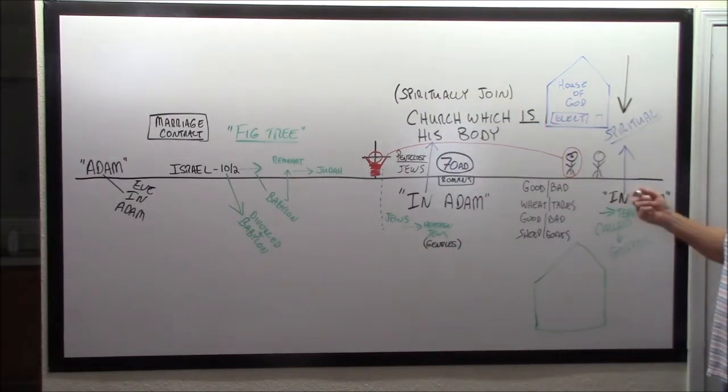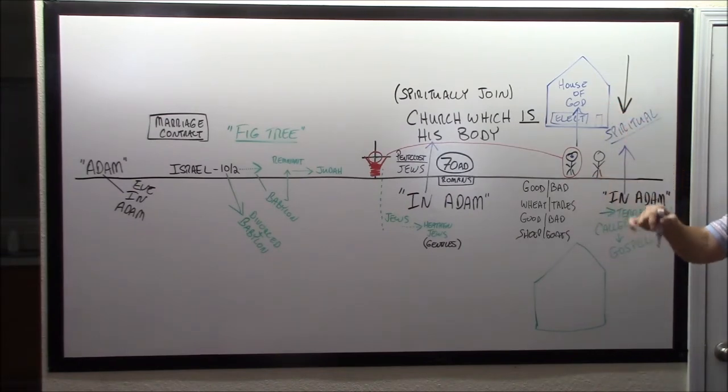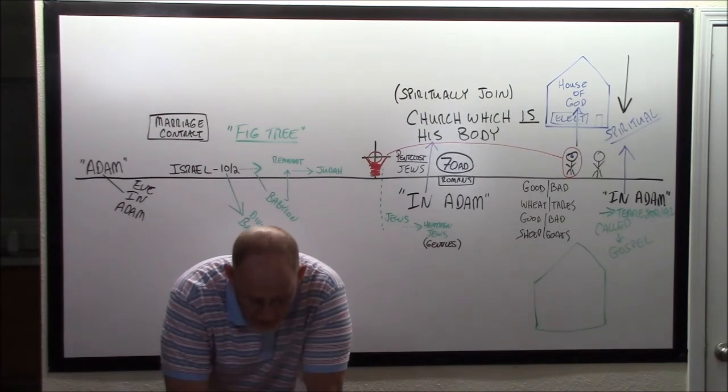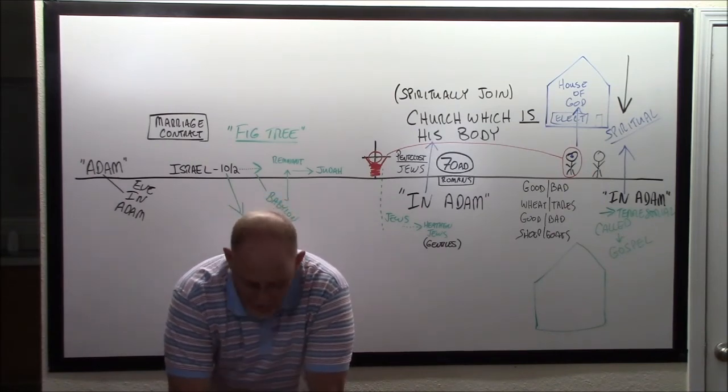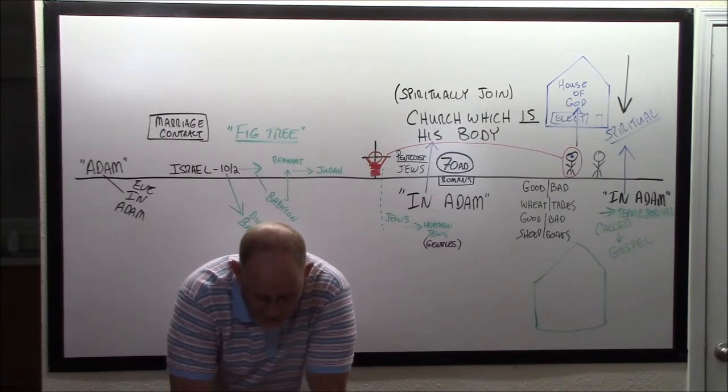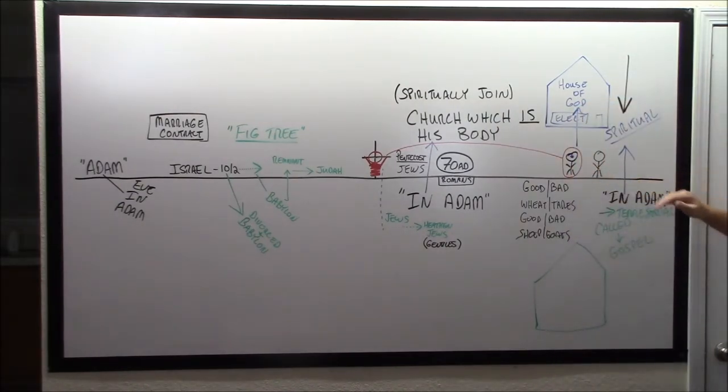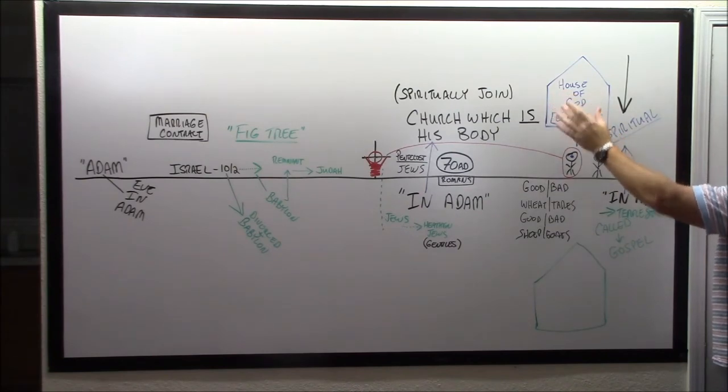The wise answered saying, Not so, lest there be not enough for us and you. Go rather to them that sell and buy for yourselves. Who's going to be ruling the world right prior to the second coming? Antichrist. Buying and selling righteousness, this religion. While they went to buy, the bridegroom came, and they that were ready went in with him to the marriage, and the door was shut. Spiritually they were already in the house of God, but when the Lord comes, physically they pass into it. What about the other five?